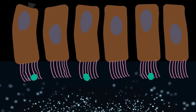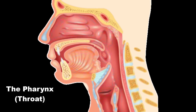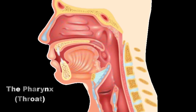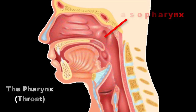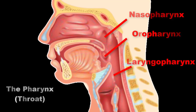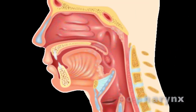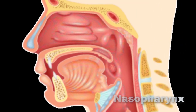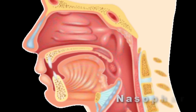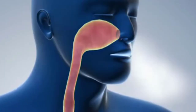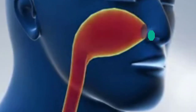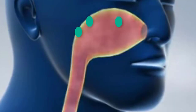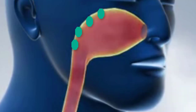The pharynx is a muscular funnel extending from the posterior nasal apertures to the larynx. It has three regions: the nasopharynx, the oropharynx, and the laryngopharynx. The nasopharynx is distal to the posterior nasal apertures and superior to the soft palate. Inhaled air turns 90 degrees downward as it passes through the nasopharynx. Relatively large particles cannot make this turn and instead collide with the wall of the nasopharynx and stick to the mucosa near the tonsil where it will be disposed of.